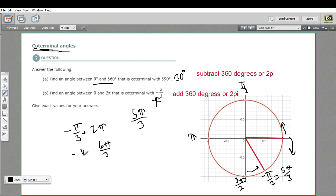So negative pi over 3 plus 6 pi over 3. Well, that's going to be 5 pi over 3. So whether you do it by plotting it on the circle or just adding or subtracting 360 or 2 pi, either way should bring you to the same result. So that is how to determine some coterminal angles.